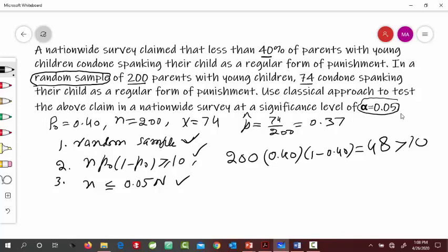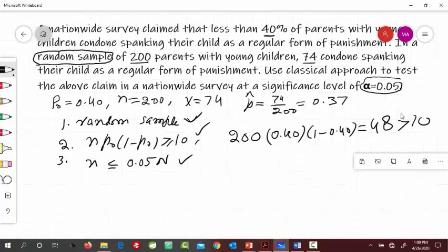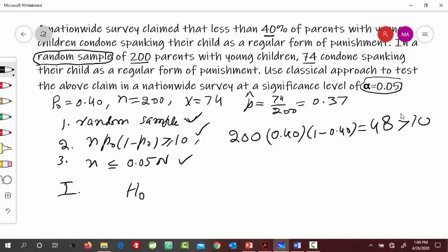Next we go with the problem, the steps for this hypothesis testing. The first step is that we have to define the null and alternative hypothesis. Null hypothesis is denoted by H0, that always comes with equal to P0, so we get 0.40. And then alternative hypothesis is H1, that would be P, and it could be less than, greater than, or not equal to. In our problem it says that it is less than the claim, so this is less than 0.40.